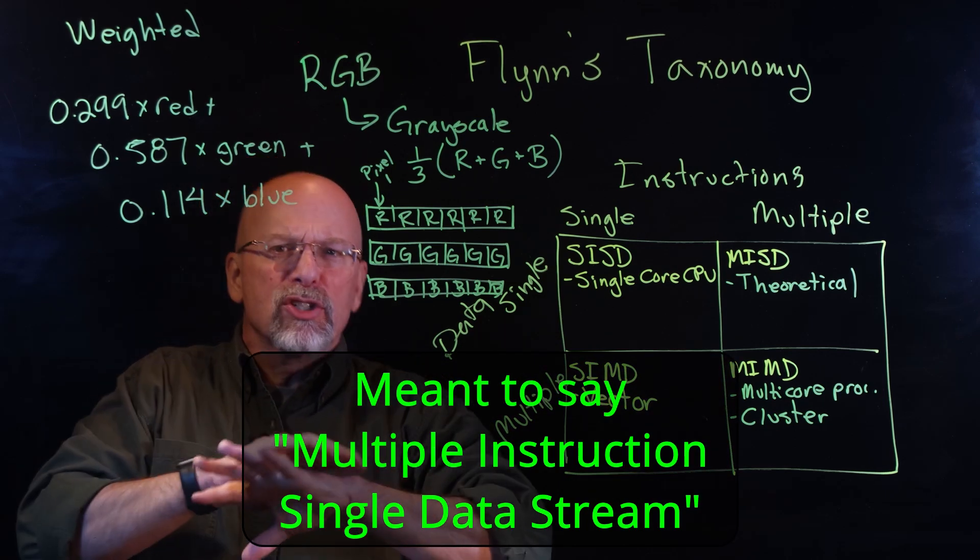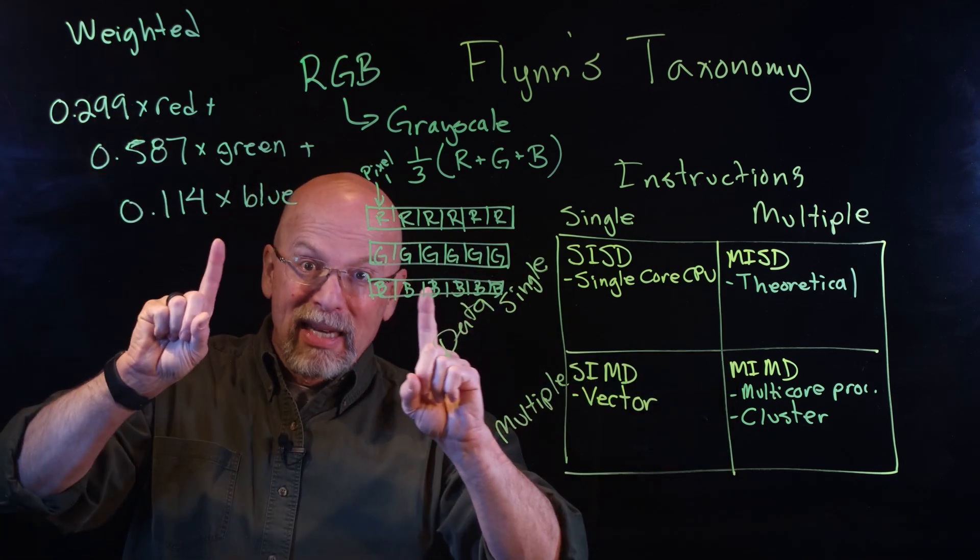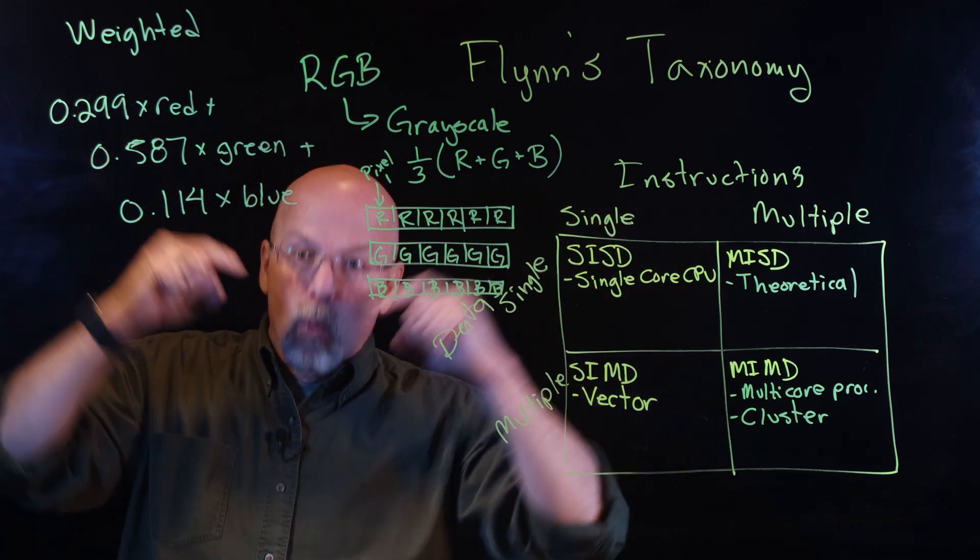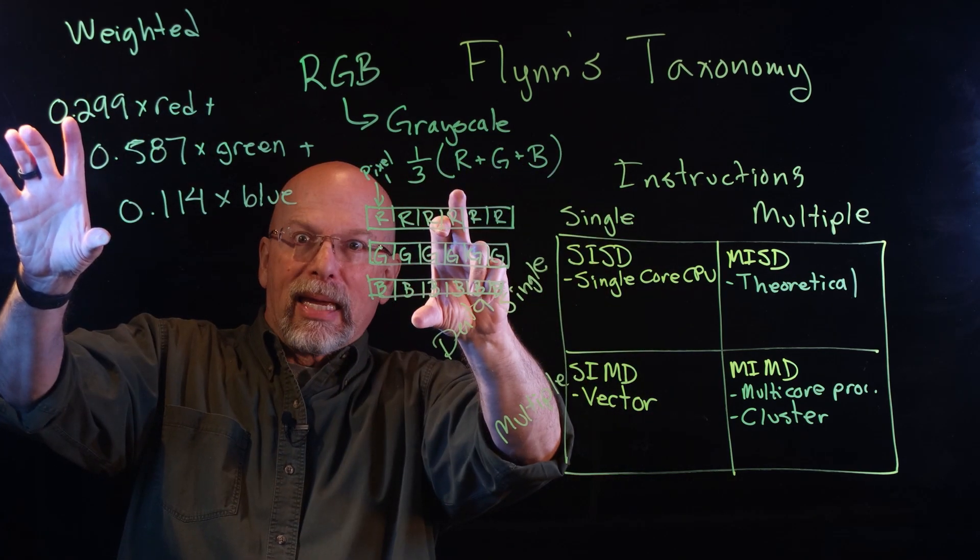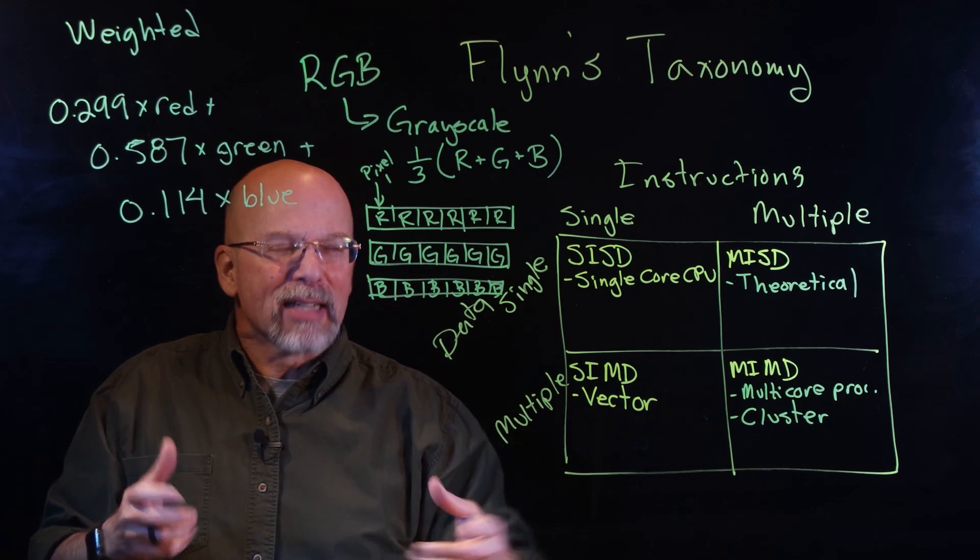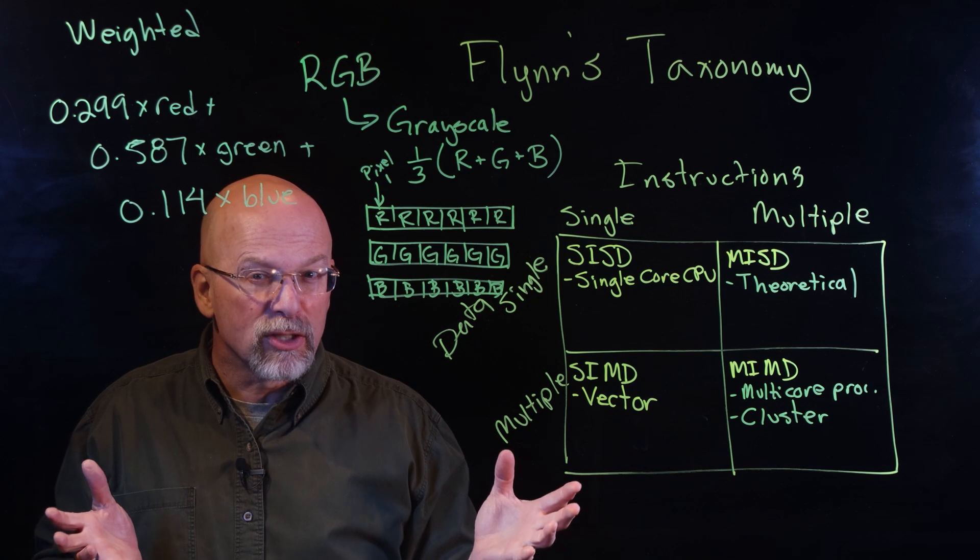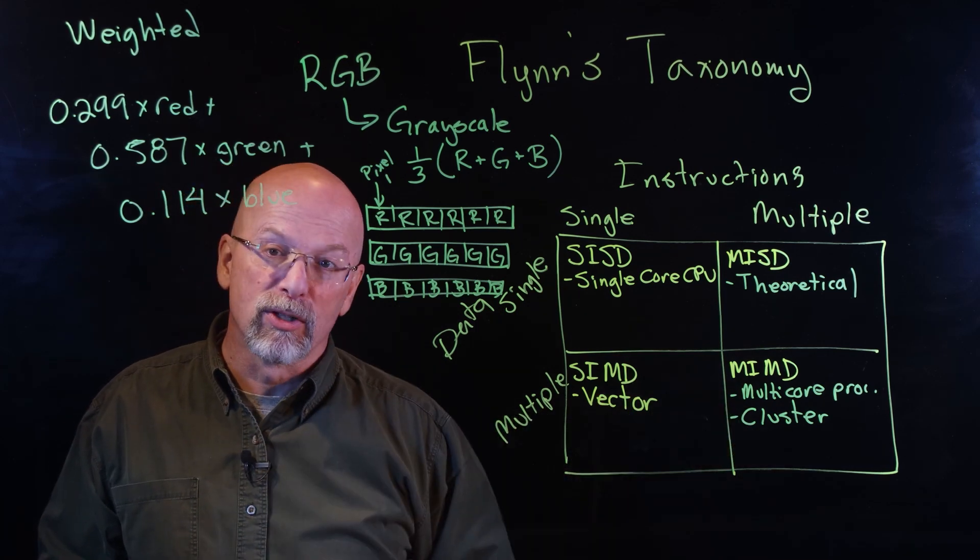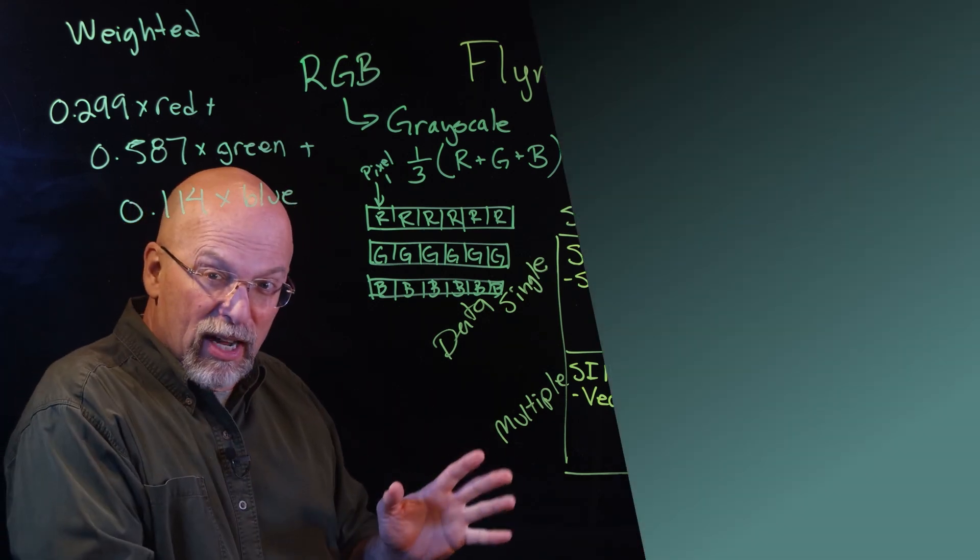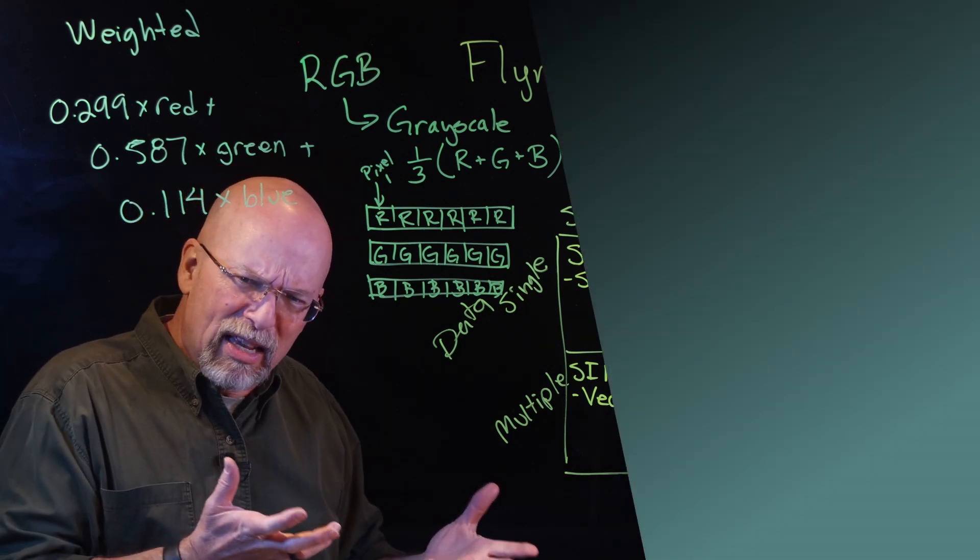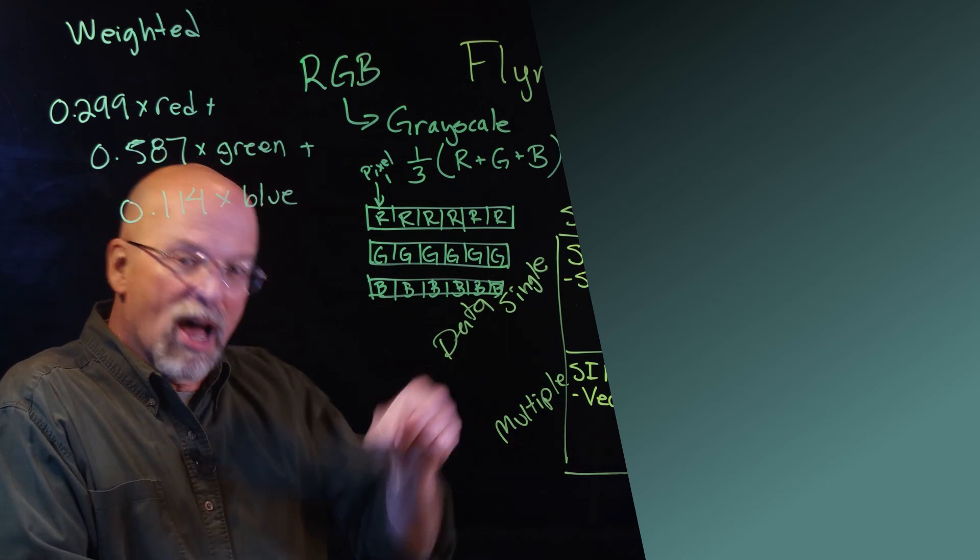But once you separate that, once you do that on two different cores, understand my example here meant that one core was sending one instruction to two different vectors, it's just changing the weighting, then you might consider that something like multiple instruction single data stream, MISD. But as soon as you separate that to two cores, you're back over here to multiple instruction multiple data stream, MIMD. That's just a brief introduction, give you an idea of the complexity of this parallelism problem and how we're going to use it when it comes to improving the performance of our applications.